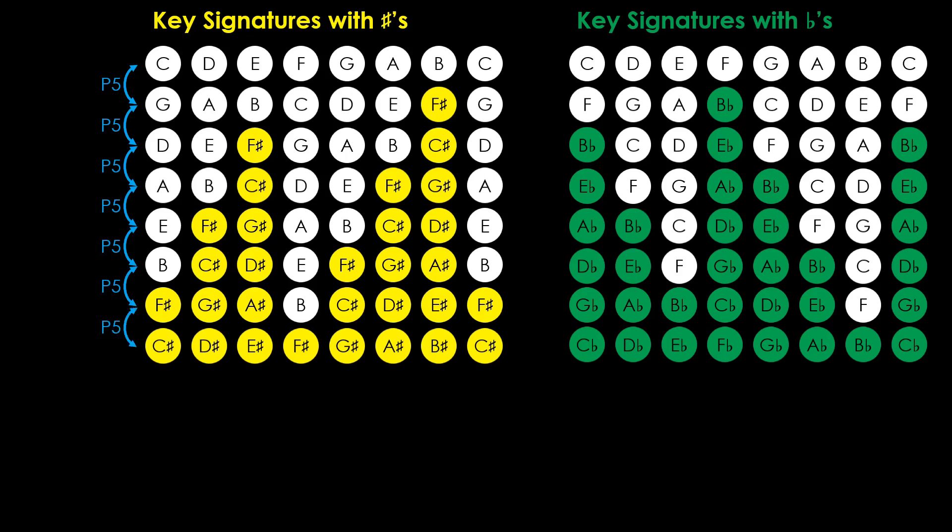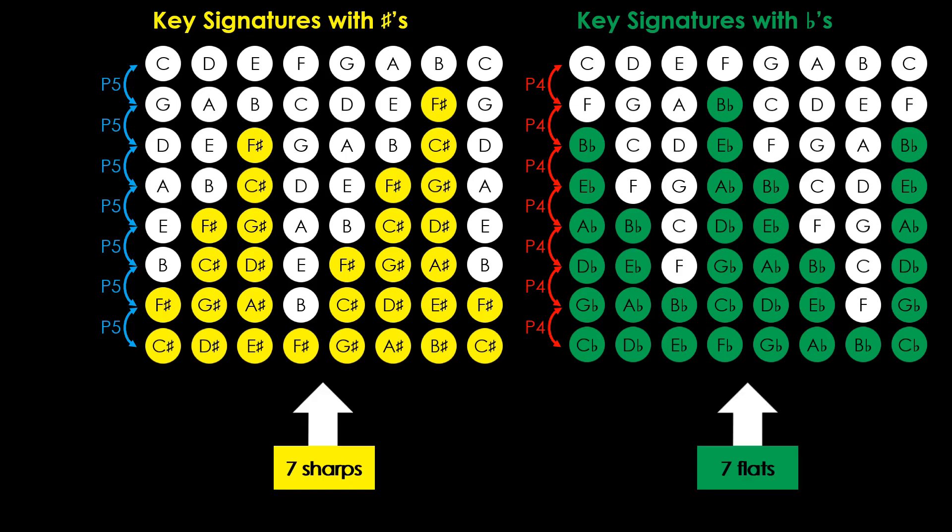On the other hand, every flat added to the current key signature places the new key at a perfect fourth above the current key. Continuing this pattern, we see that the maximum number of flats or sharps we can fit in the key's signature is seven before the pattern overrides itself.